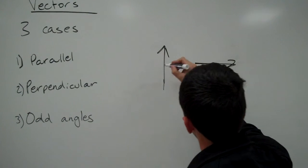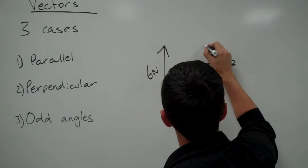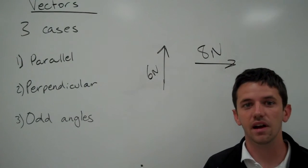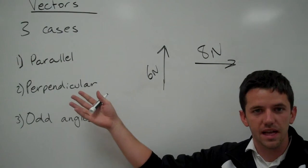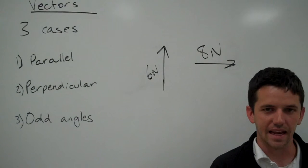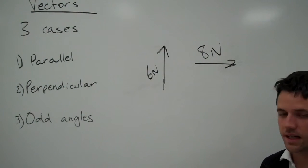And if I have vectors of 6 newtons and 8 newtons, we have to figure out a way to combine these. It doesn't work the same way we've done before where we're just adding or subtracting - we have to find another way to combine these.